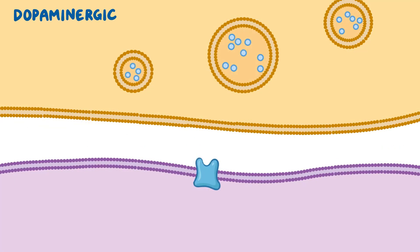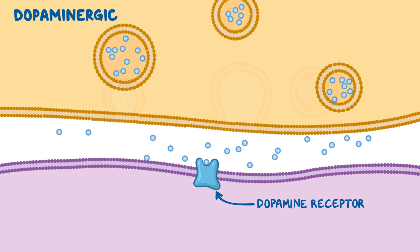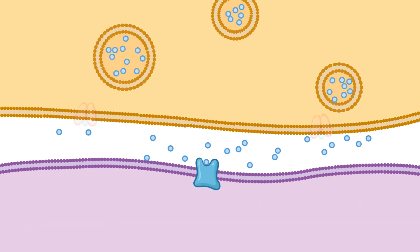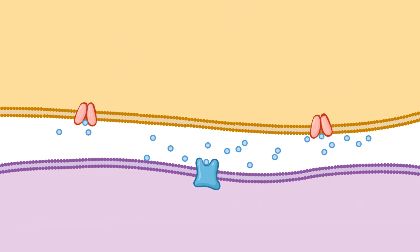Lastly, dopaminergic neurons release dopamine, which binds to dopamine receptors, stimulating cognitive functions, motivation, and wakefulness. As long as there's a high enough concentration of neurotransmitters in the synaptic cleft, the postsynaptic neurons will continue to fire.